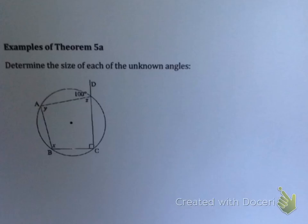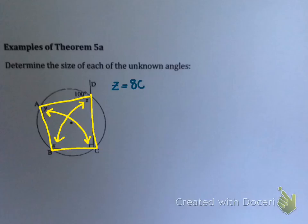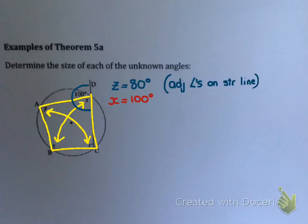Let's see what this looks like in an example. Determine the size of each of the unknown angles. As soon as I look at this I see a cyclic quad ABCD, which means opposite angles add to 180. So X and Z will add to 180, and Y and 90 degrees will add to 180. Z equals 80 degrees — adjacent angles on a straight line — which means X must be 100, because opposite angles of a cyclic quad add to 180.